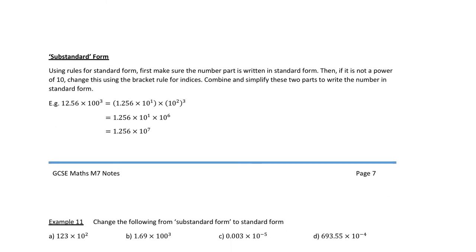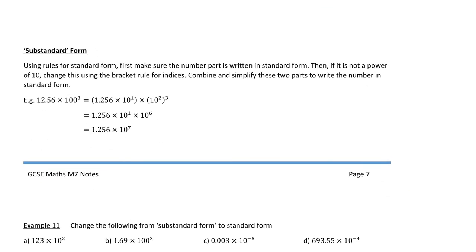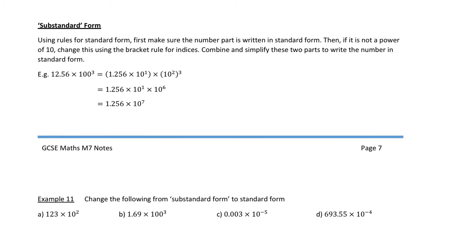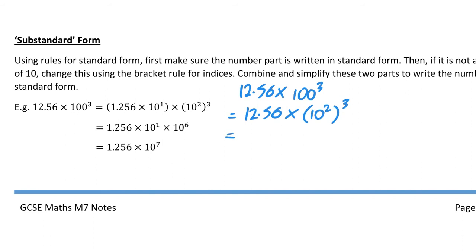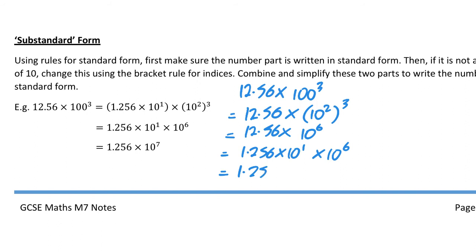We're now going to look at how we can use rules of standard form to convert numbers which aren't in standard form into standard form. For example, 12.56 times 100 cubed. I'm going to change 100 to 10 squared, then cubed, giving 10 to the power of 6. Then I sort out my 12.56 as 1.256 times 10 to the power of 1, times 10 to the power of 6, which gives 1.256 times 10 to the power of 7. Both methods are fine.